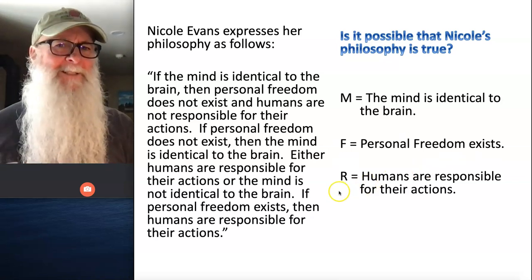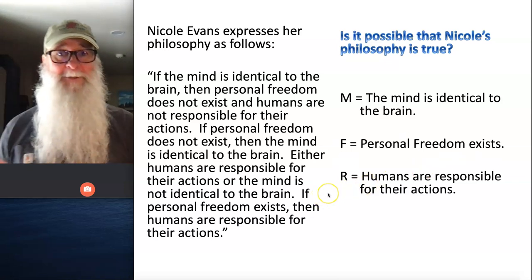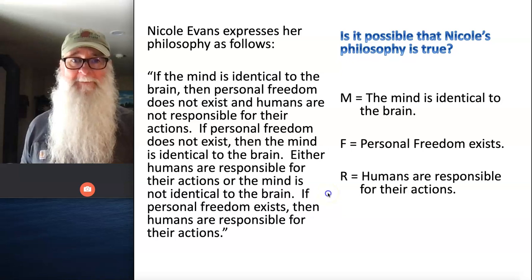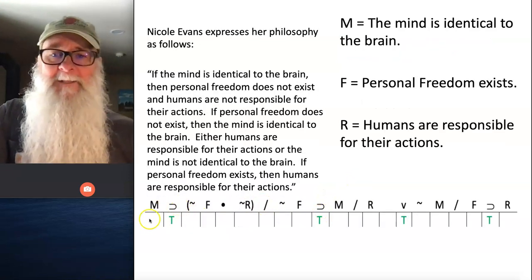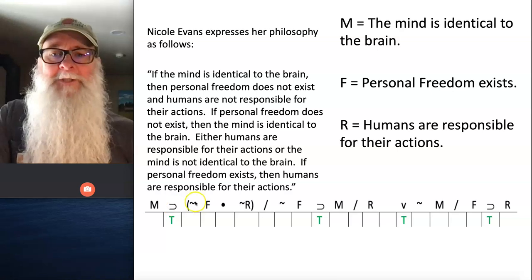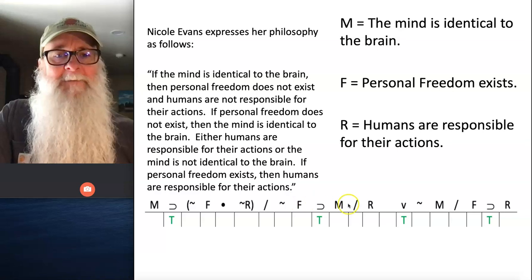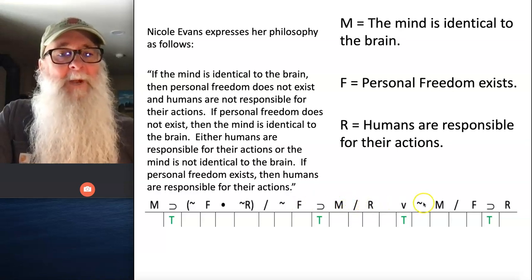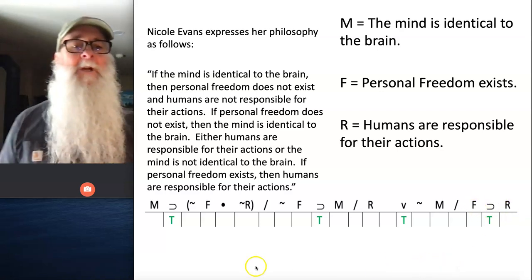I hope you did this because there are some really interesting implications to the truth table for this statement. The statements are symbolized as follows: the first is M horseshoe (tilde F dot tilde R); the second is tilde F horseshoe M; the third is R wedge tilde M; and the final statement is F horseshoe R.